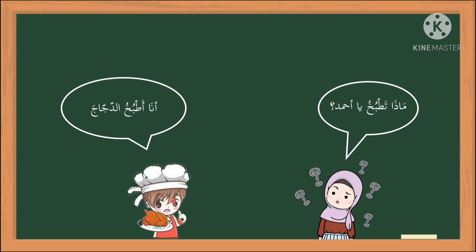Kalau kita ingin bertanya 'Apa yang sedang awak masak?' kepada seorang lelaki atau budak lelaki, kita akan menggunakan perkataan tatbuku. Tengok sini — Perkataan tatbuku dimulakan dengan Ta berbaris fathah. Ta di sini adalah dhamir muttasil, kata ganti nama merujuk kepada 'awak.' Anta tatbuku — Awak sedang masak. Dhamir muttasil lil fi'li — kata ganti nama yang masuk pada perbuatan.